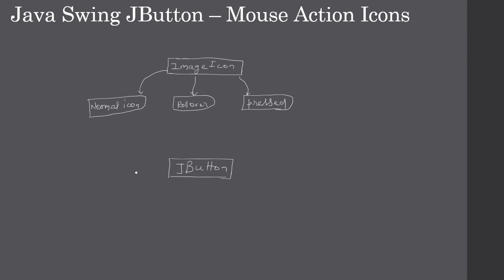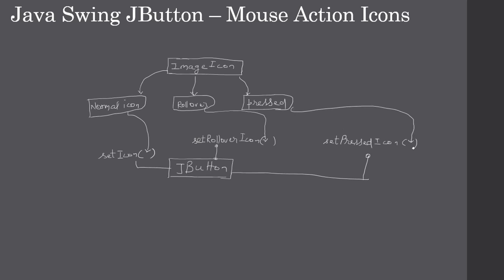Then we will create our JButton and set all these icons on it. To set the normal icon you call setIcon and pass the normal icon instance of type Icon. Then we call setRolloverIcon and provide the rollover icon. Then we call setPressedIcon. So these are the three methods to call after creating the JButton: setIcon, setRolloverIcon, and setPressedIcon, passing the relevant icons to each method.